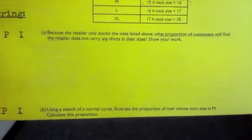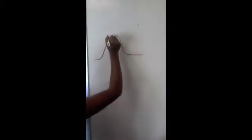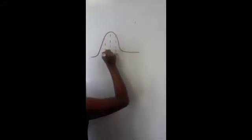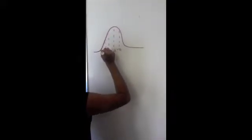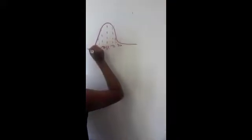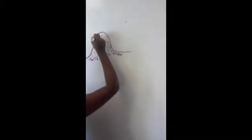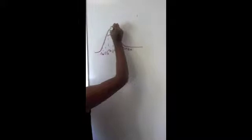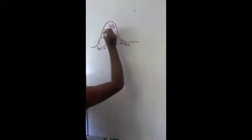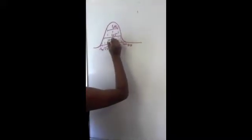Okay, the question says, using a sketch of a normal curve, illustrate the proportion of men whose shirt size is M. Calculate this proportion. Well, this is the normal curve, and this is mu, right here. And this is the first deviation, second deviation, and third deviation. So the measurement from here to here is 68%. The measurement from the negative second deviation to the positive is 95%. And from here to here is 99.7%.